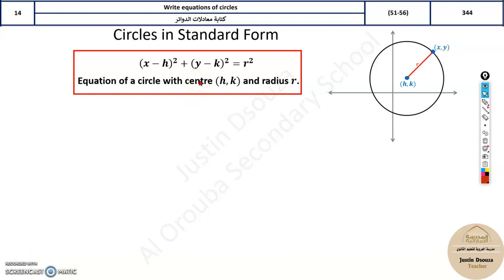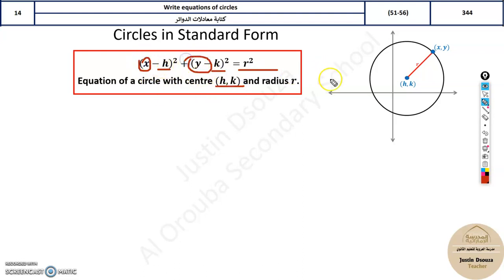In this topic, we have to write equations of circles. Equations of circles are one of the easiest among all the other conic sections because a circle is easy to understand, interpret and solve. We must remember the standard form. The circle's standard form is (x minus h) squared plus (y minus k) squared equals r squared. This is the radius. H and k is the center, and x and y are the coordinates.